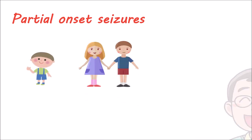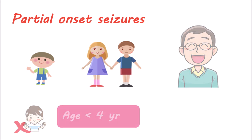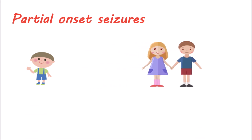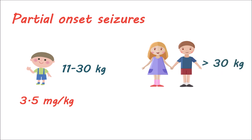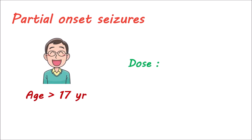Pregabalin can also be used for the treatment of partial-onset seizures as adjuvant therapy. This medication can be given to both children and adults, but it is not recommended for children under the age of four. The initial dose in children is based on body weight. For children weighing 11 kg to 30 kg, the initial dose is 3.5 mg per kg per day. In children with a body weight greater than or equal to 30 kg, the dose can be given at 2.5 mg per kg in divided doses. The initial dose in adults aged 17 years or older is 150 mg per day.